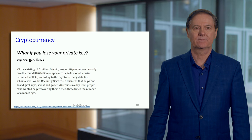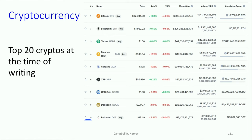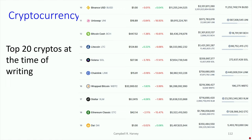So what do these cryptos actually look like? This is from CoinMarketCap, a website that tracks thousands of cryptos. You can see the top cryptos here — Bitcoin at the top, then Ethereum. There are different types, including some stablecoins tied to the dollar, like Tether and USD Coin. Many of these have different blockchain technologies we'll talk about later. I'm showing only the top 20 here, but there are many, many cryptos, and even number 19 has substantial value.